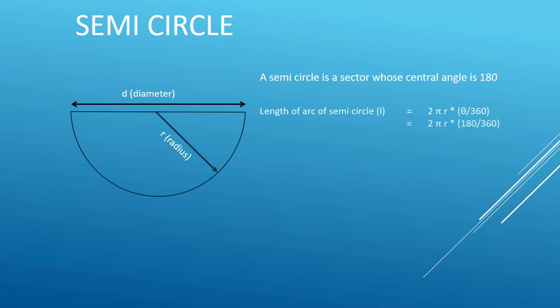The length of arc of a semicircle is given by 2πr multiplied by 180 divided by 360, which simplifies to 2πr divided by 2. Therefore, the length of arc of a semicircle is πr.